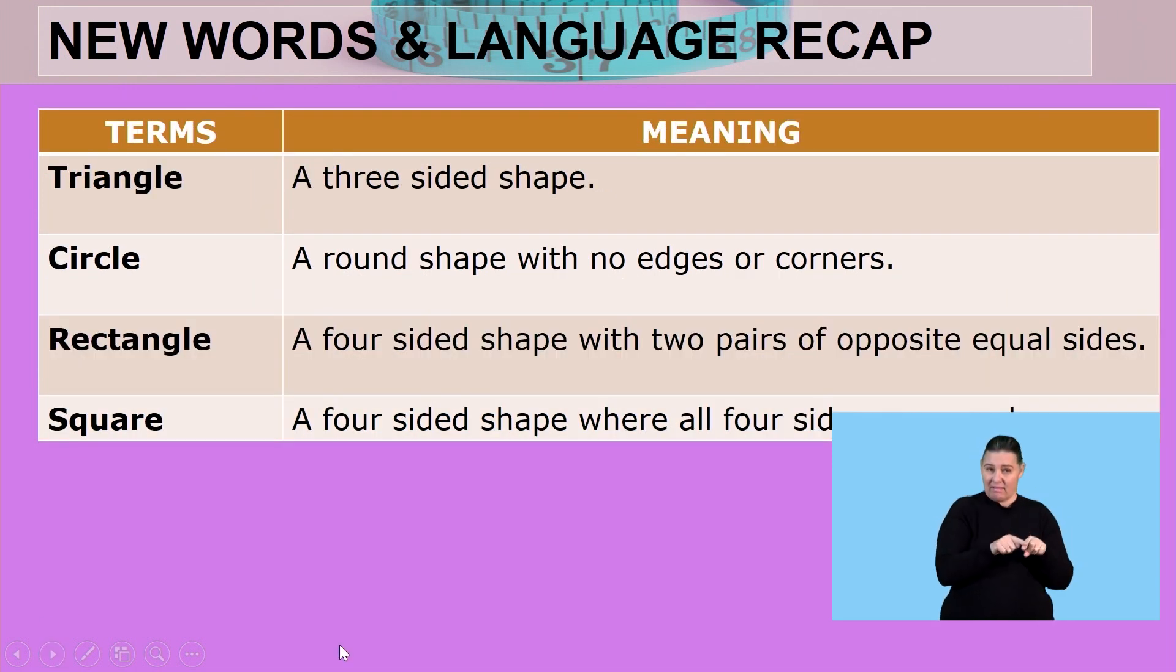Then we spoke about our regular shapes: the triangle, a three-sided shape; a circle, a round shape with no edges or corners, just radius and diameters.